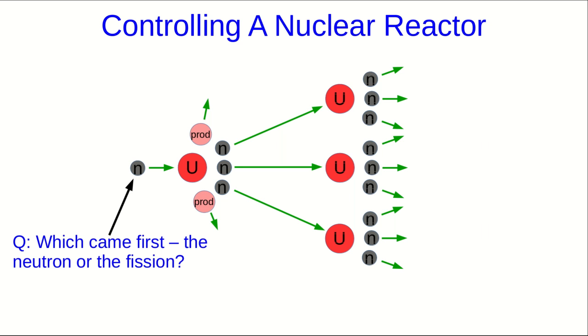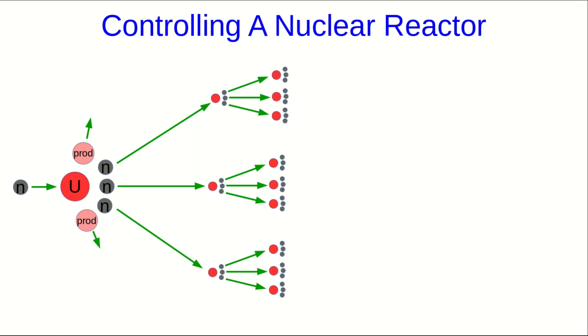First of all, you might notice a question, sort of a chicken and egg question. Where did that original neutron in this chain come from? The answer to which came first, the neutron or the fission, is in fact the fission. Because there is such a thing as spontaneous fission, where the uranium splits without being hit by a neutron. That deals with the chicken and egg problem, but now let's think more about the chain reaction.